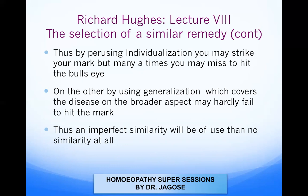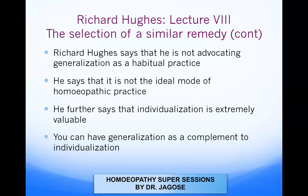Richard Hughes says if you use generalization, the remedy you use has an imperfect similarity — the simile, or partially similar remedy — because you are using it only on general terms. At least this is better than using no similarity at all. Partial similarity is better than total absence of similarity. He is not advocating generalization as a habitual practice; it is not the ideal mode of homeopathic practice.